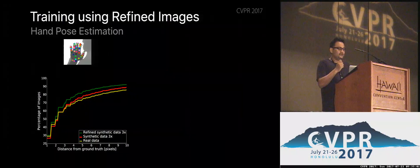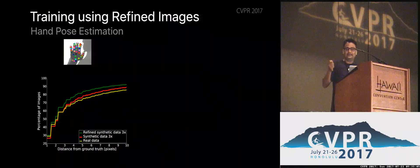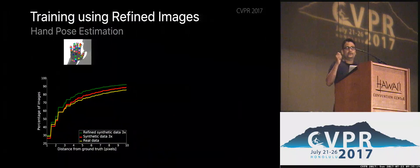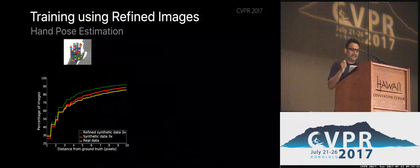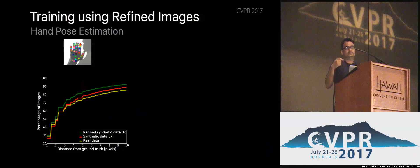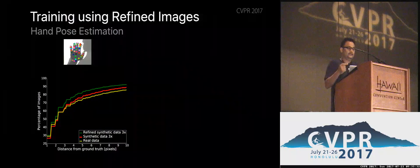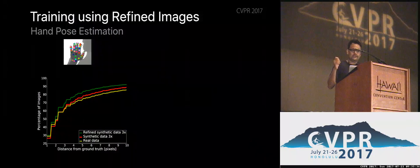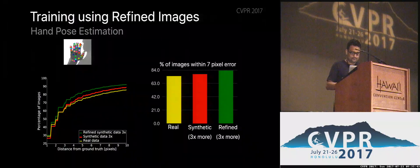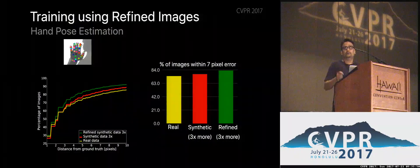We can generate almost infinite amounts of synthetic data and refine it through the refiner network. The question we ask is: can we outperform training with a limited amount of real data? We compare limited real data (yellow), synthetic data three times larger than the real set (red), and refined images corresponding to those three times synthetic images (green). The x-axis is the distance between ground-truth and predicted joint locations; the y-axis is the percentage within a threshold. Performance improves substantially with refined images, even compared to the real images.